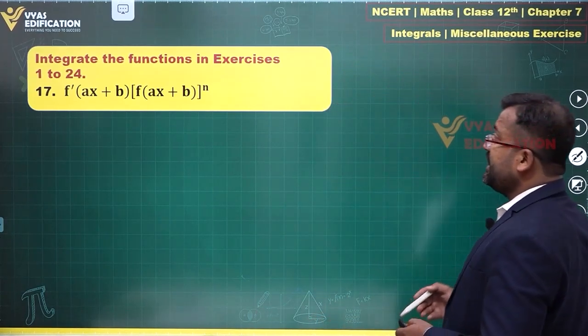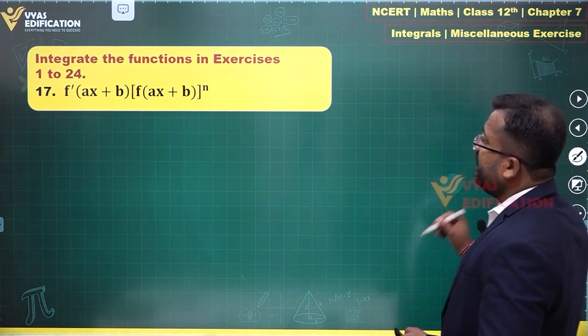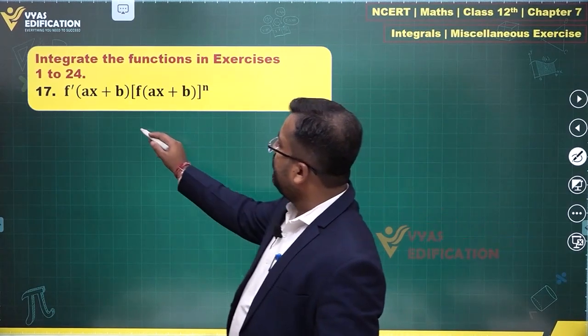In the 17th question we have f prime ax plus b and f of ax plus b power n. If you note,